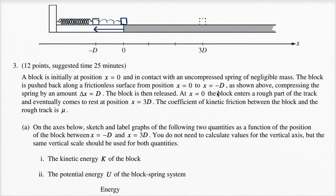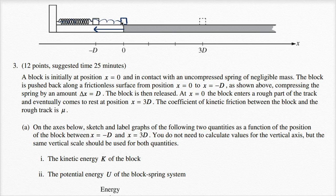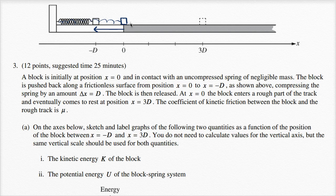The block is then released. At x equals zero, the block enters a rough part of the track and eventually comes to rest at position x equals three d. When we compress the spring, we're doing work that gets stored as potential energy in the spring-block system. When released, that potential energy converts to kinetic energy, accelerating the block until x equals zero. Since there is friction, it decelerates the block at a constant rate — a constant force of friction being applied.